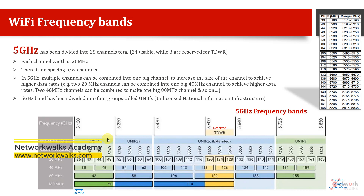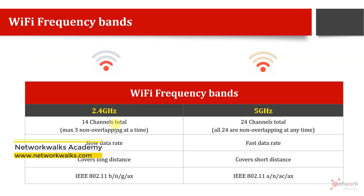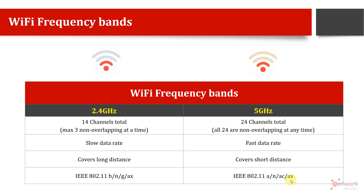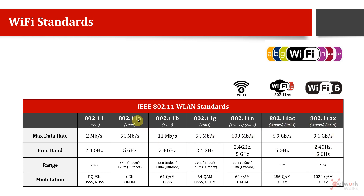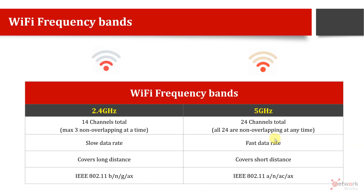To summarize the differences: 2.4 GHz operates on IEEE 802.11 b, g, n, and ax standards, while 5 GHz supports a, n, ac, and ax. This means 2.4 GHz supports Wi-Fi 6 but does not support Wi-Fi 5 (ac), while 5 GHz can work on both Wi-Fi 5 and Wi-Fi 6. I made a separate video explaining all these standards — what is b, g, n, ac, ax, Wi-Fi 4, Wi-Fi 5, Wi-Fi 6, and 6E — which is also available in this playlist.